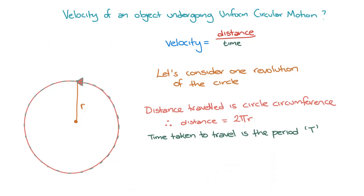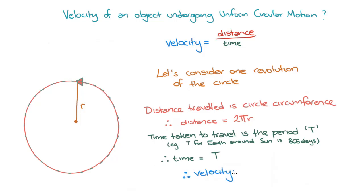For example, the period of the Earth travelling around the Sun, which we discussed earlier, is 365 days — that's the period of the Earth's orbit. So if we look back at our velocity equation and plug in the values we've derived, we see that v, the velocity of an object undergoing uniform circular motion, is equal to 2πr divided by big T, the period. The speed of an object undergoing uniform circular motion is equal to 2πr on T.